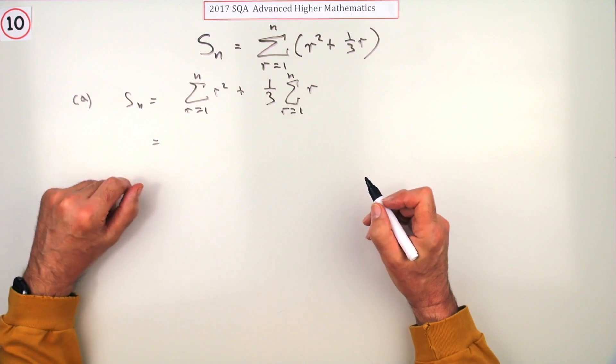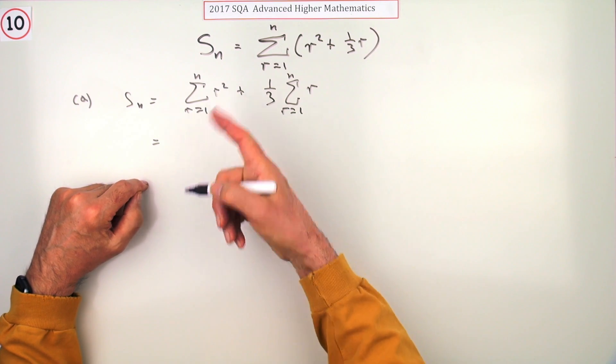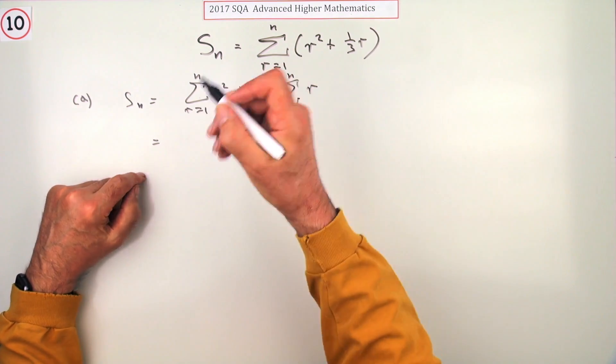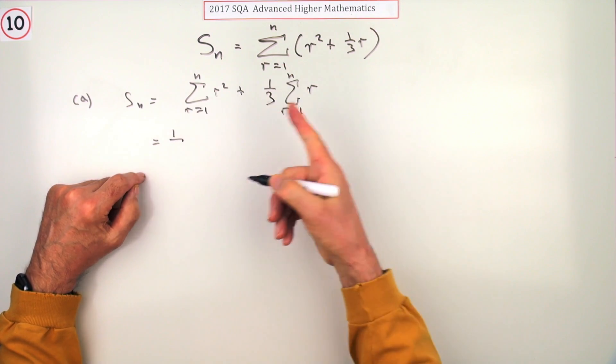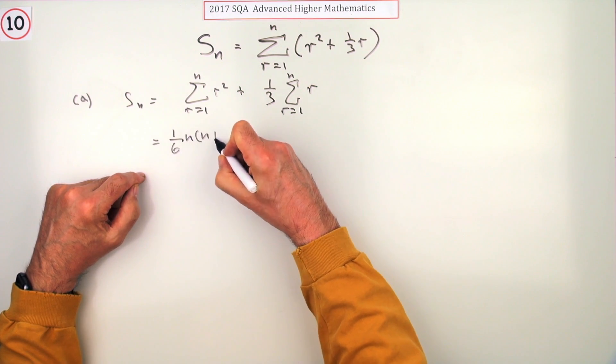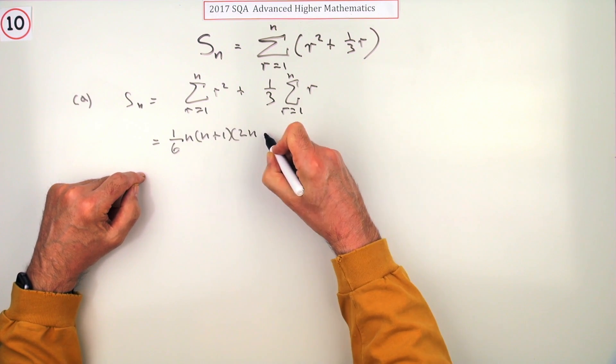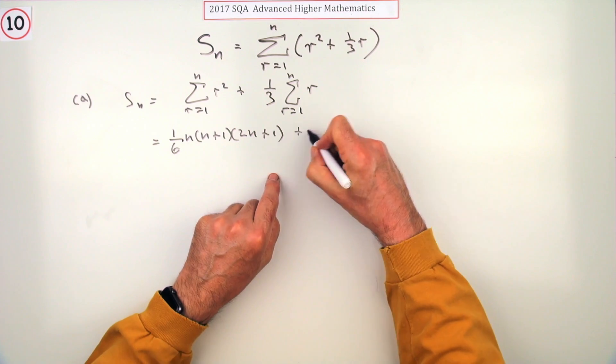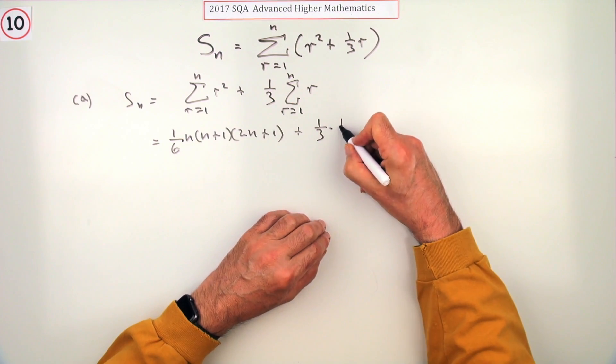Then you just look those up at the front. That's the one that you don't remember, but you don't need to know. That was the tricky one to remember. That's the one that's a sixth of n times n plus one times two n plus one.